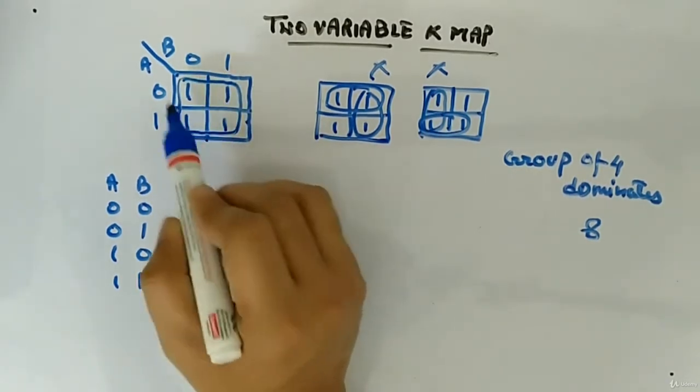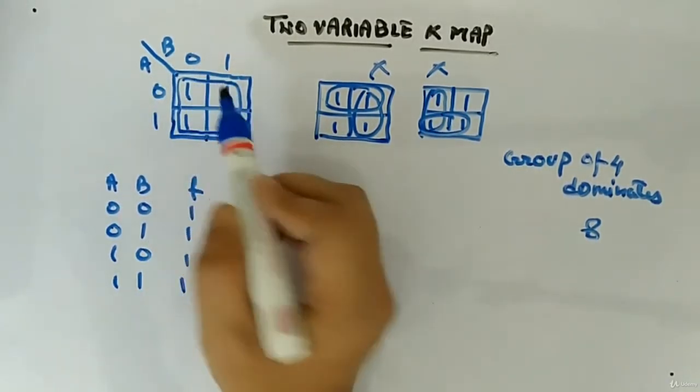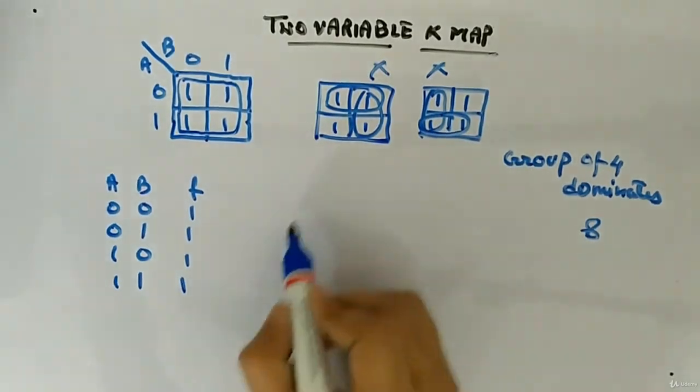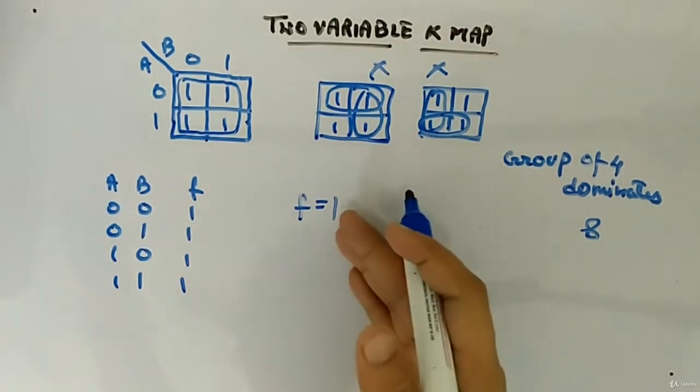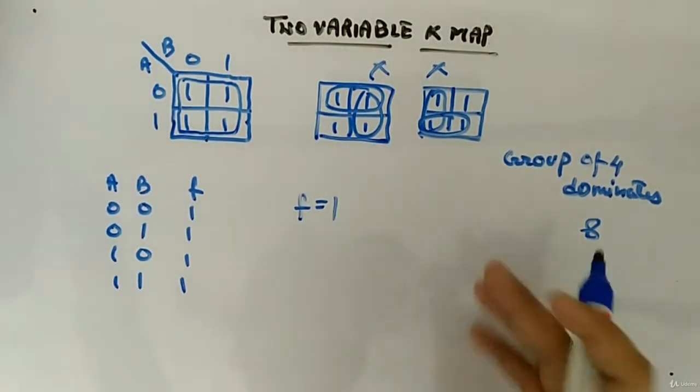And you can see all the values: A is also changing, B is also changing. The function values are all one, so f is equal to one. So this is the pair of four you can see. Just an example I want to give.